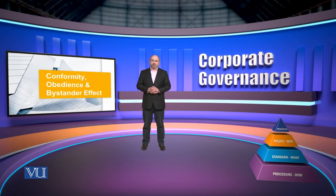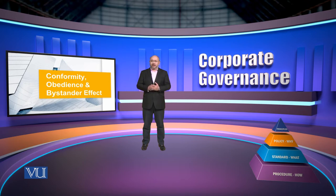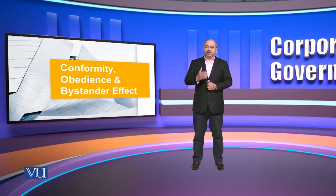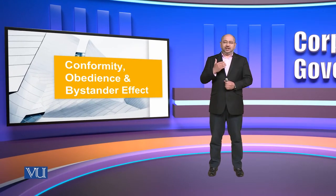Bismillahirrahmanirrahim and Assalamu alaykum Pakistan. We are back with our corporate governance course and today we are going to study a very important topic because it has direct relevance to corporate governance — why things are being done or not done, and what are the different influences which compel or restrain employees. Today's topic is conformity, obedience, and bystander effect. These three elements are interrelated but yet independent of each other.